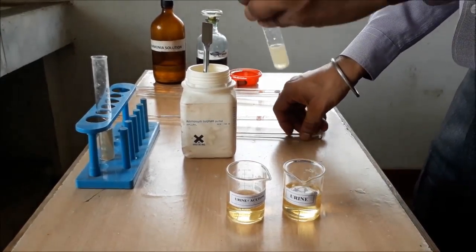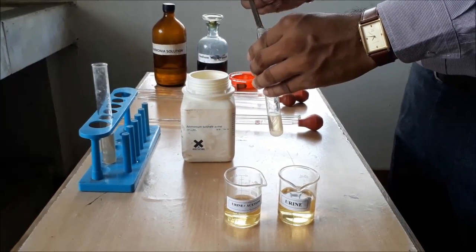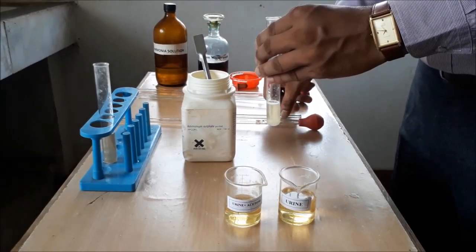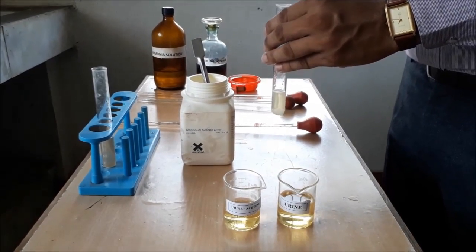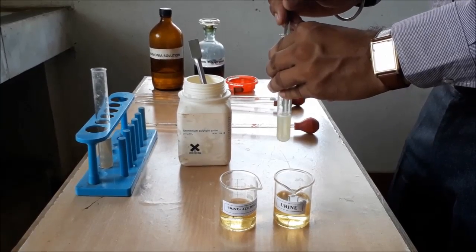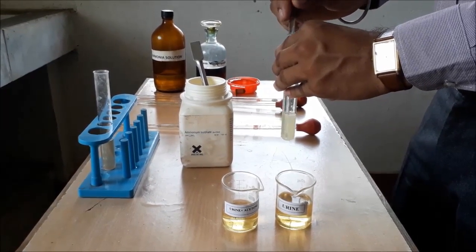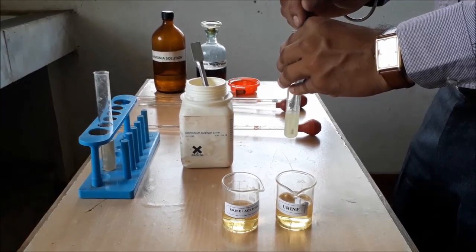When there will be a precipitate or there will be a residue of ammonium sulphate below the test tube, we have to stop dissolving or adding extra amount of ammonium sulphate. After each spatula, we have to dissolve it with the help of glass rod.